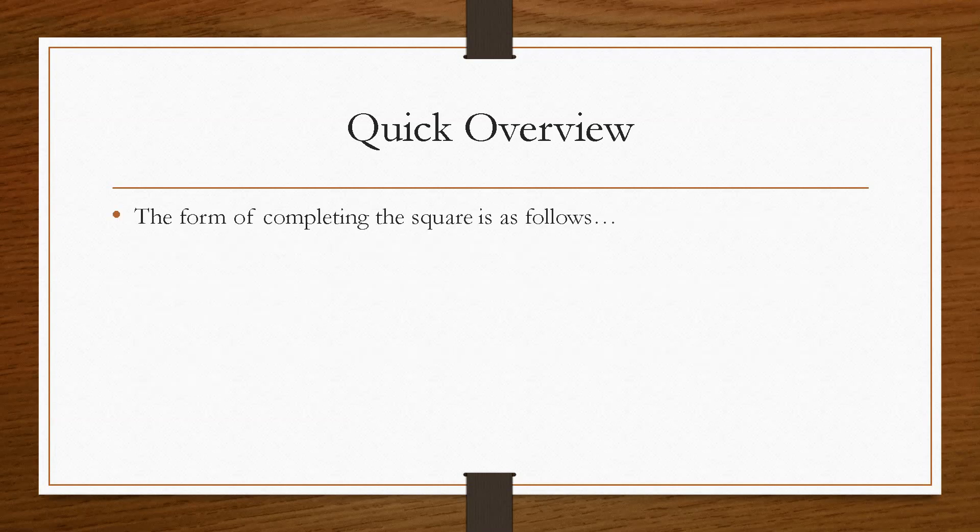So the form of completing the square will look like this. So when you see express in this form, you must think completing the square. And the values of a, b and c are rational values.